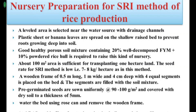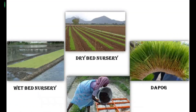At 6 days after sowing, a thin film of water is maintained all around the seedling mats. Seedlings in this method are ready for transplanting after 15 days. This was nursery preparation for the SRI method. Thank you for watching — please subscribe to the channel for more agriculture-related videos.